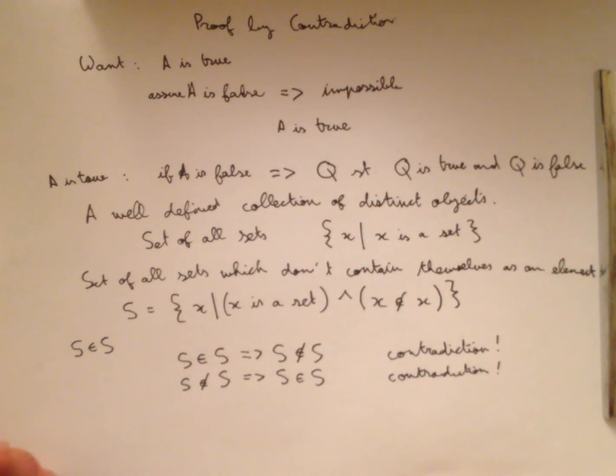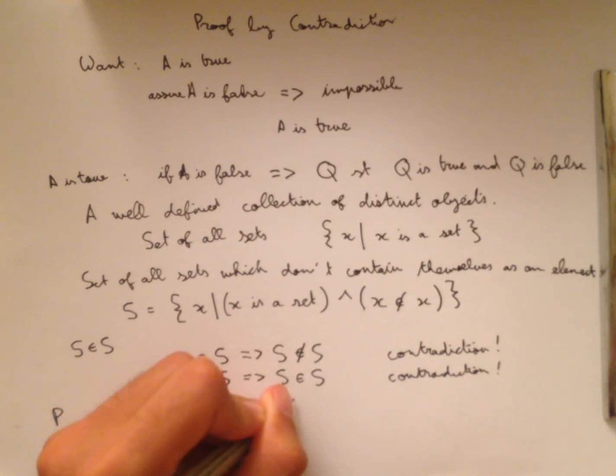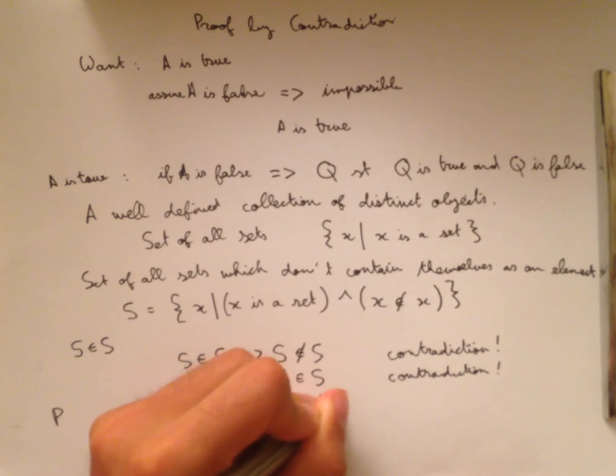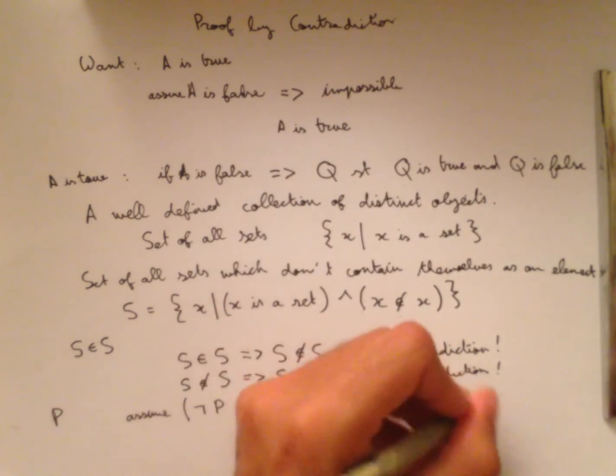So what this means is that we don't need to make any assumptions to get a contradiction in this system. So that means that for any statement P, we can prove that P is true by assuming not P and then show that that implies a contradiction, and that allows us to conclude that P must be true.